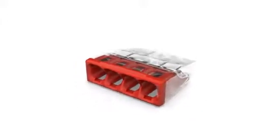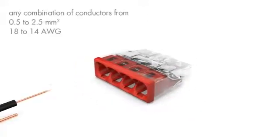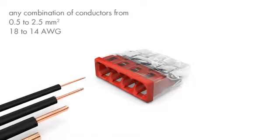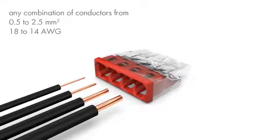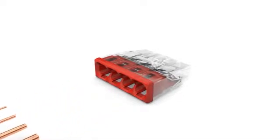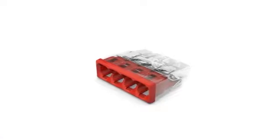The 2273 series also allows any combination of conductor sizes ranging from 0.5 to 2.5 square millimeters or 18 to 14 AWG. Therefore only one series is required for connecting all cross sections.